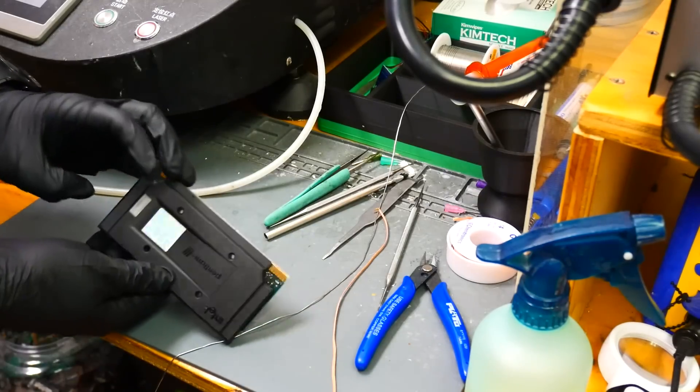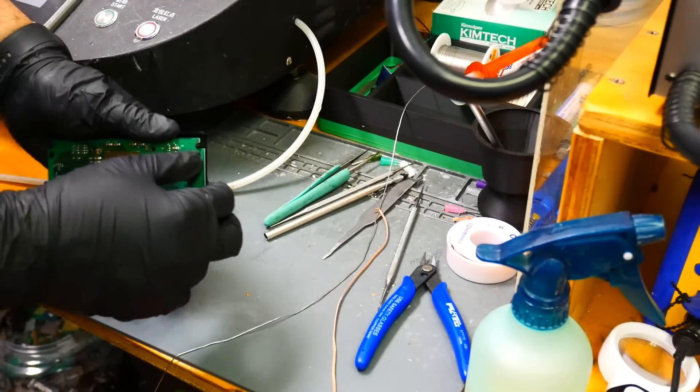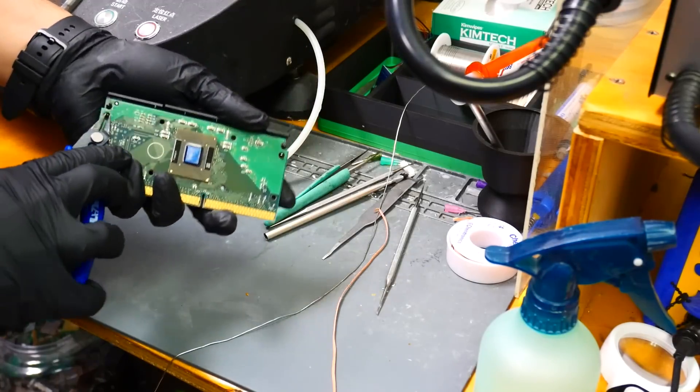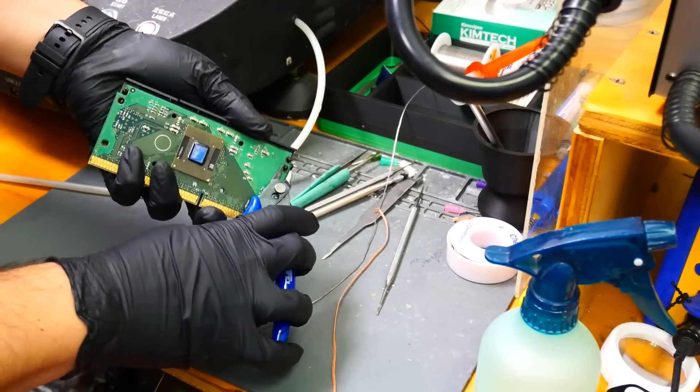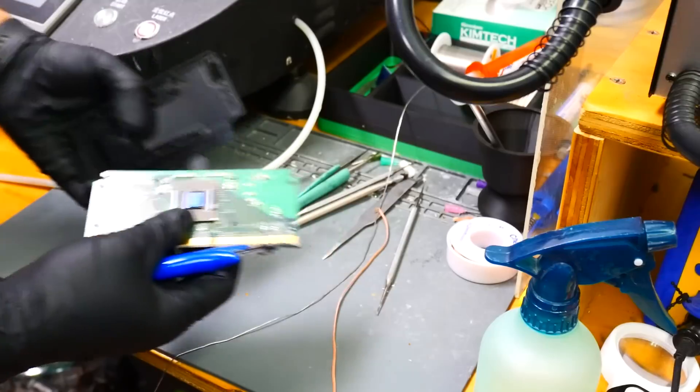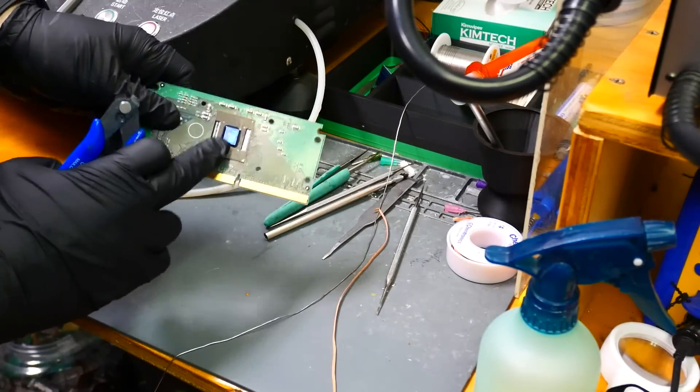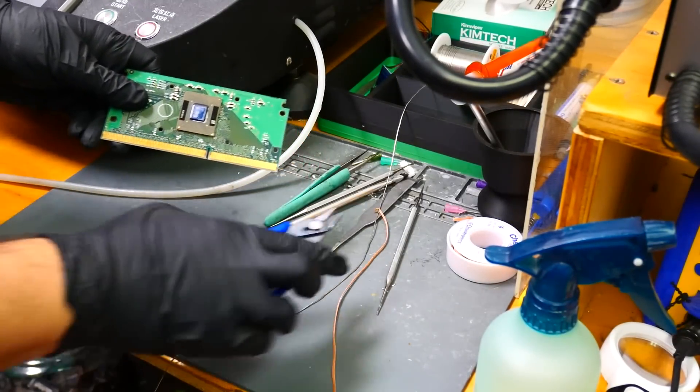The first thing we'll be doing is removing the plastic off of this Pentium processor here. There are easier ways to do this but in the interest of time... And now we need to remove the BGA from this board. So let's go ahead and do that.